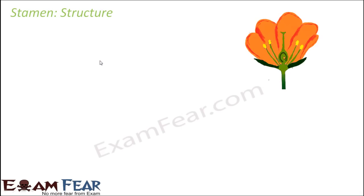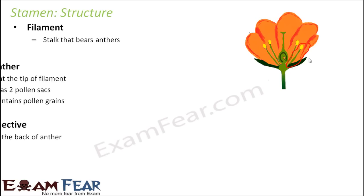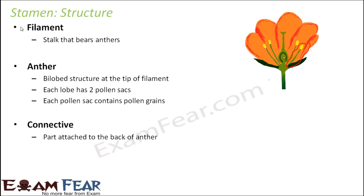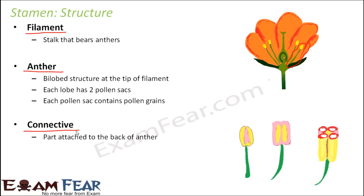Let us start with the structure of the stamen — each individual stamen. The stamen can be broadly divided into three parts: the filament, which is the stalk that bears the anther; the anther itself; and the connective. The stamen looks somewhat like this — the stalk is the filament, and the upper portion is the anther.